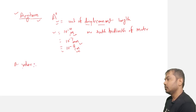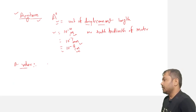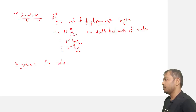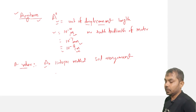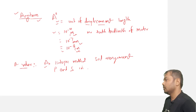The second term we will discuss is the A value. Basically, the A value is an isotopic method. It is an isotopic method that is used in soil management, especially to determine the phosphorus and sulfur in soil.